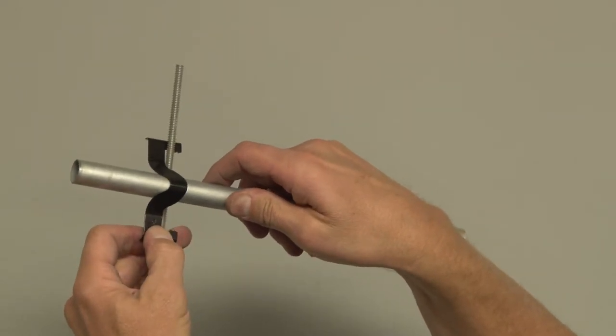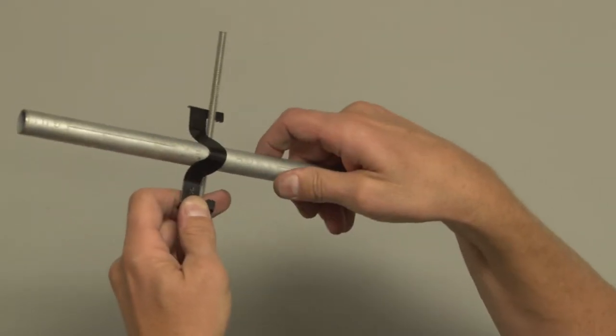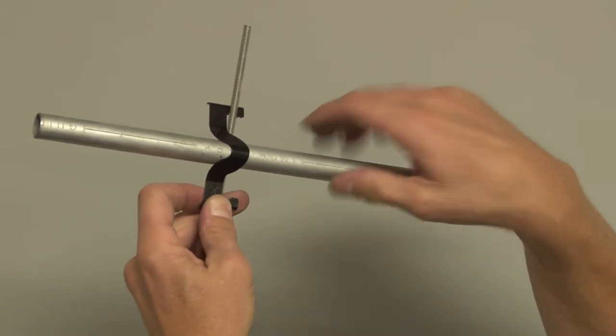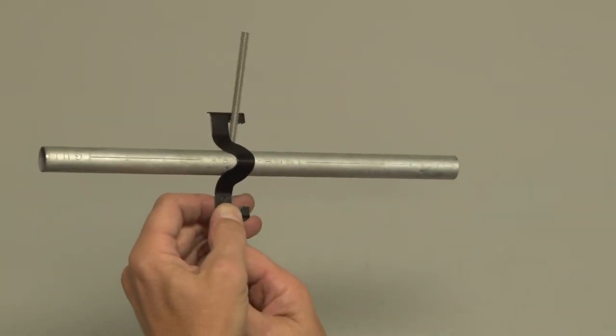As you can see, it's bowed out to support the conduit and nestle securely against the threaded rod.